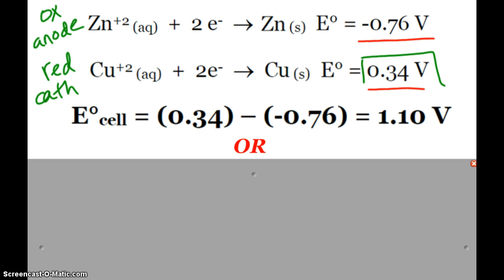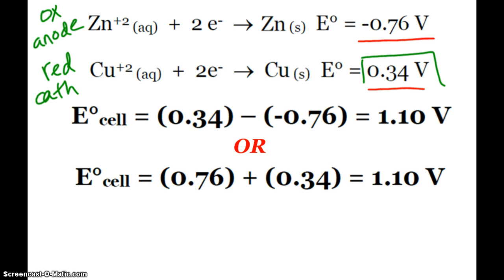To calculate the potential, the E-naught of this cell, I simply take the cathode minus anode, and I don't touch the numbers from the table. So 0.34 minus negative 0.76, the potential is 1.1 volts. Or if you want to do the adding, then this would be the oxidation potential with the sign flipped to 0.76, plus the reduction potential which is still 0.34. Either way, we get our 1.1 volt value.